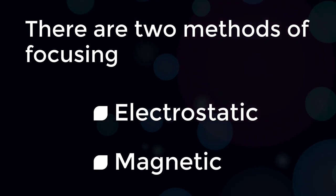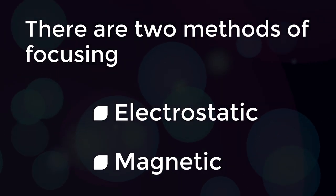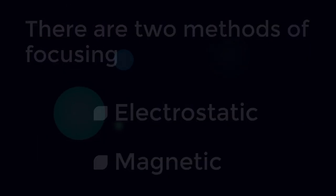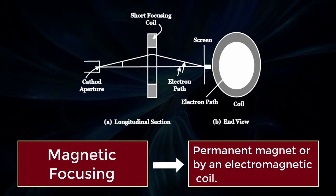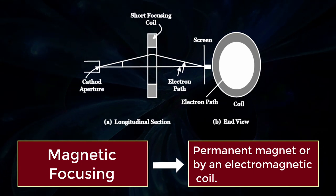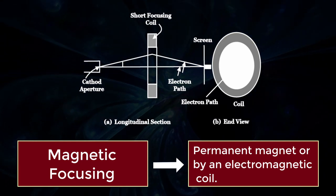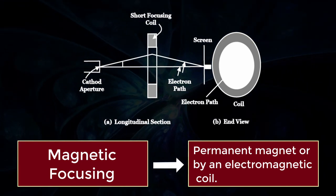There are two methods of focusing: electrostatic and magnetic focusing. Here we are going to look into Magnetic Focusing. Magnetic focusing may be achieved either by a permanent magnet or by an electromagnetic coil whose axis coincides with the axis of the beam.